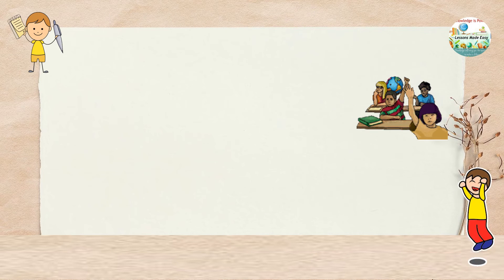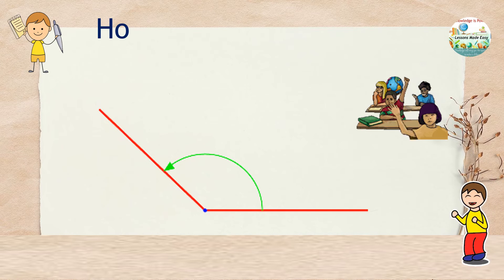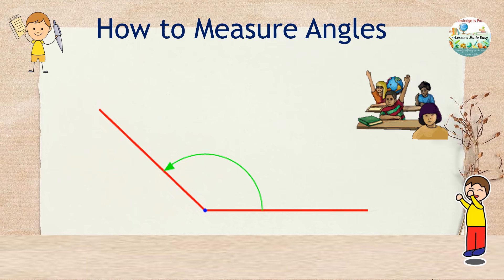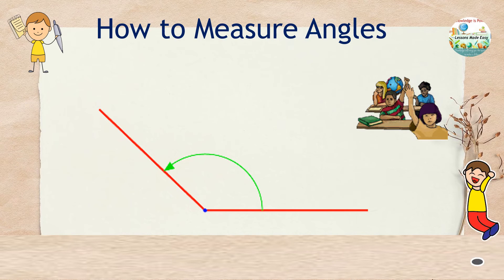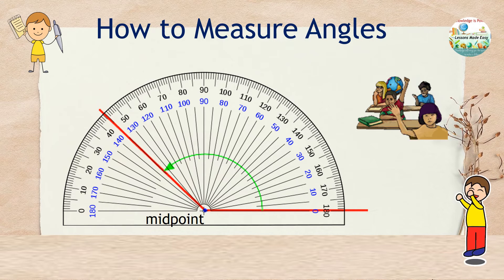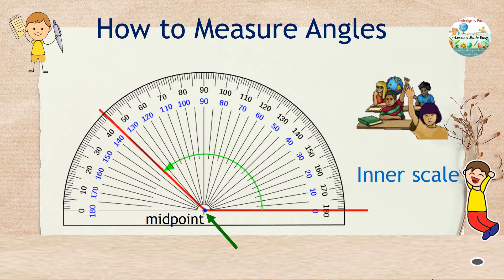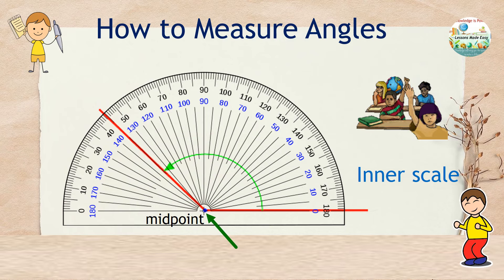Suppose the angle is already given, but the size is unknown. How do we measure the angle? Let's try to measure this given angle. Take your protractor and make sure the midpoint goes over the vertex.